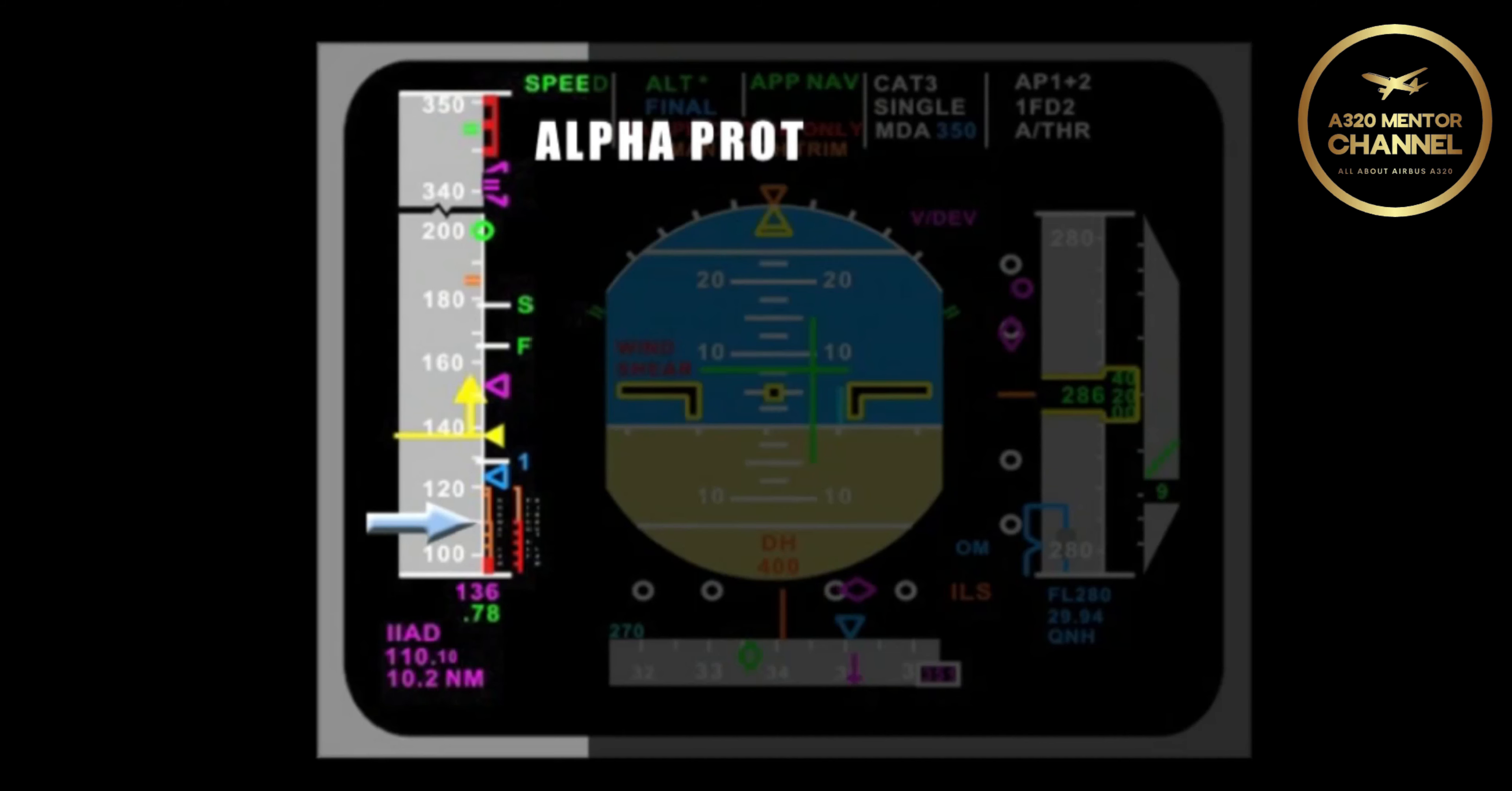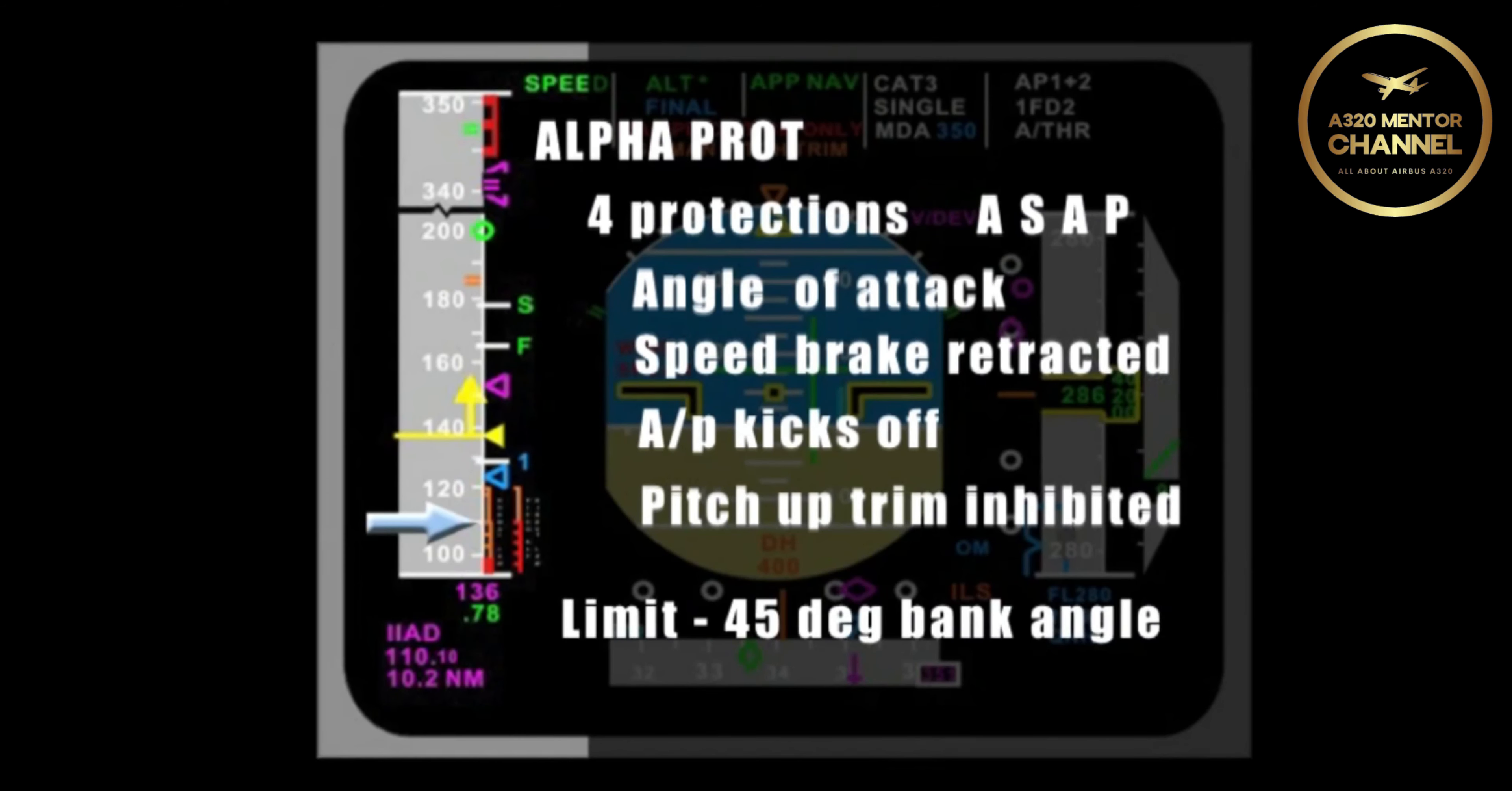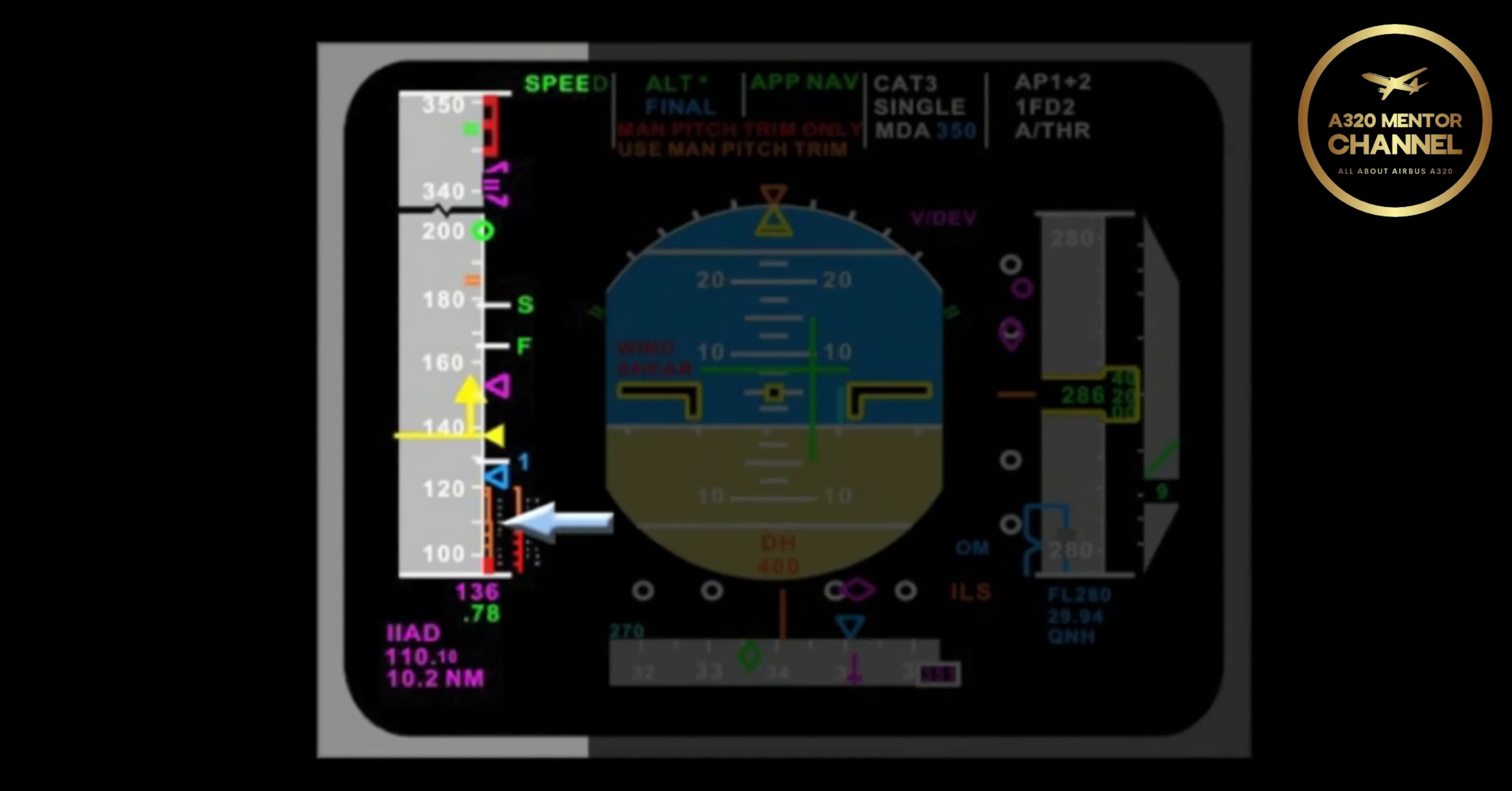When I move the stick in alpha-prot, I am commanding a load factor. There are four protections in effect. We use the acronym ASAP. Angle of attack is commanded, the speed brakes retracted, the autopilot kicks off, and the pitch nose up trim is inhibited. We are limited to a 45 degree bank angle.